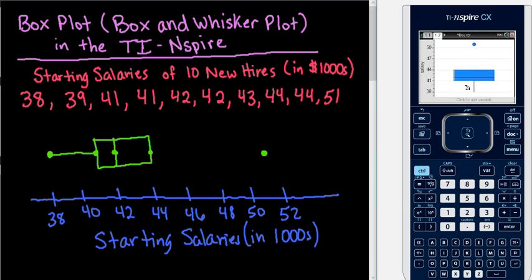And it'll do a vertical box plot. So some people like to have vertical box plots instead of horizontal. Or if you want to go back to the horizontal, you just have to click back down here again and it'll automatically change the orientation.